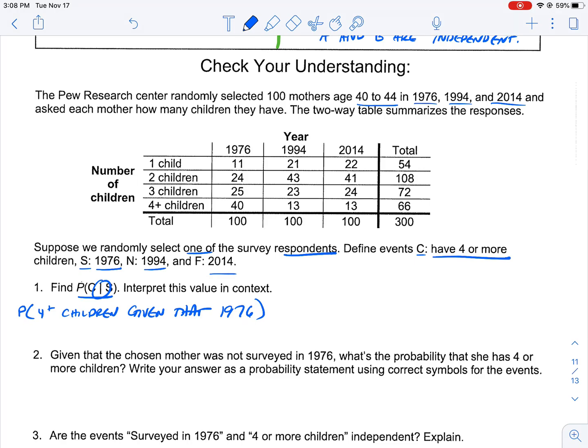So probability of four plus children given that it was in 1976. Four plus children, 1976, follow the columns, boom. So in this case, this is 40 over 100. Interpret the value in context. Given that the mother was surveyed in 1976, there was a 40% chance she had four plus children.